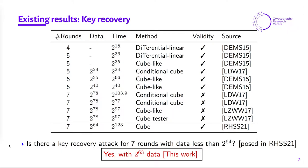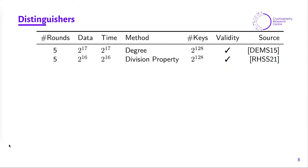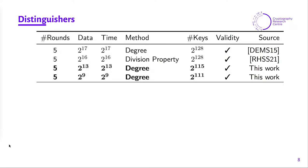If we look into the weak distinguishers for ASCON, for five rounds the best has data complexity 2^16 based on the division property, and it works for all 2^128 keys. We observed that there exist some keys where we can reduce the data complexity. For instance, there are 2^115 keys where we can distinguish 5 rounds with just 2^13 data. There are also 2^111 keys where we can reduce the data complexity further from 2^13 to 2^9. Compared to the previous 5-round distinguishers, we have improved distinguishers in this work.